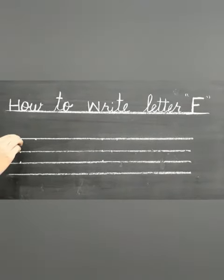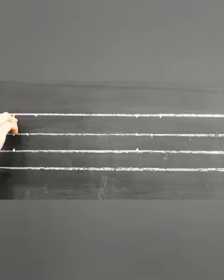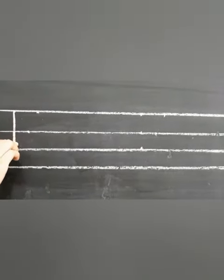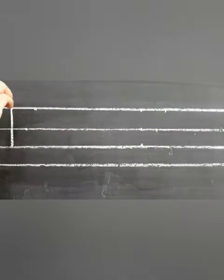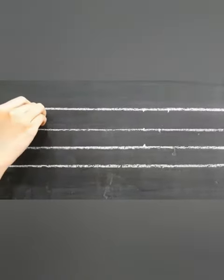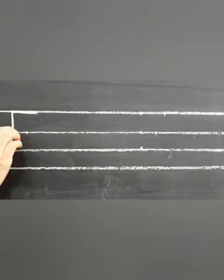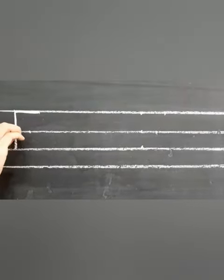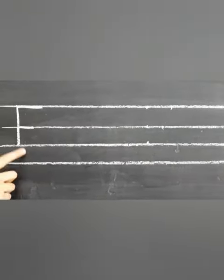First of all, put your pencil on the first dot. Start from the top and go down. Stop on the third line, okay? Then go back to the top and go straight across. Stop on that dot. Then go to the middle, go straight across and stop on that dot. This is letter F.